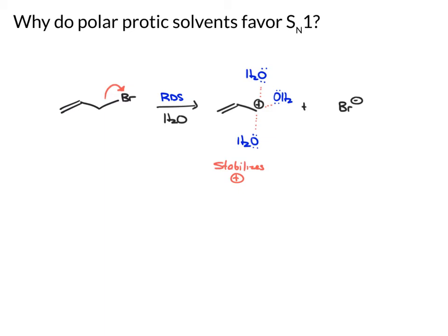This coordination can also happen with aprotic solvents, because they often have oxygen with lone pairs as well. But the second thing that happens with polar protic solvents is they stabilize the leaving group. Drawing a few water molecules with bonds to hydrogens shown, the lone pairs on the Br are attracted to those hydrogens, forming partial bonds that stabilize the leaving group. That's why polar protic solvents are so good for SN1 — they give stabilization of both the carbocation and the leaving group formed in the rate-determining step, making that step more productive.